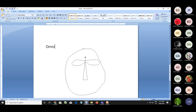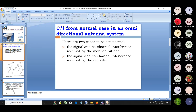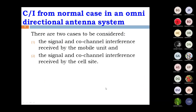Now, what is meant by the C/I ratio calculation for an omnidirectional system? We calculate the C/I ratio under two cases. The first case is the signal and co-channel interference received by the mobile unit. The second case is the signal and co-channel interference received by the cell site.